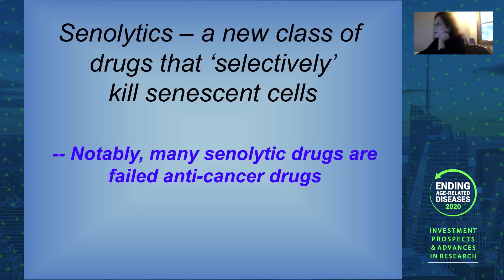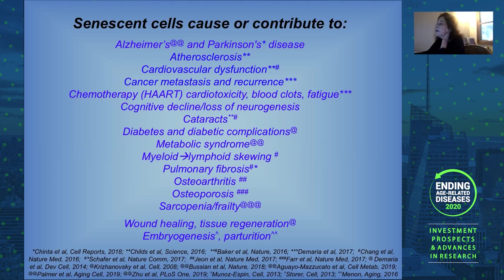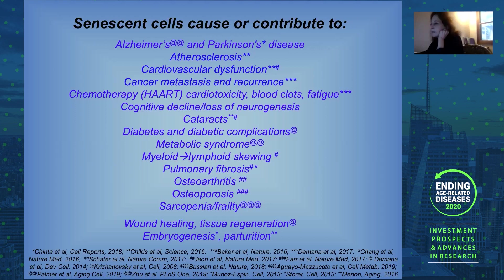Using these drugs and transgenic mouse models, I have here a partial list — I really can't keep up with the literature anymore — of evidence that eliminating senescent cells will alleviate a very large number of age-related diseases and pathologies. Of course, they have to be used carefully because they will also interfere with wound healing and tissue regeneration, and they would not be used during pregnancy when the embryo is developing. Nonetheless, these studies have shown us that it is possible to intervene in a large swath of aging phenotypes by eliminating senescent cells.